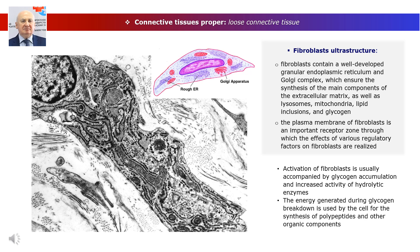At the ultrastructural level, fibroblasts contain a well-developed granular endoplasmic reticulum and Golgi complex, which ensure the synthesis of the main components of the extracellular matrix, as well as lysosomes, mitochondria, lipid inclusions, and glycogen. The cytoskeleton is clearly expressed. The plasma membrane of fibroblasts is an important receptor zone through which the effects of various regulatory factors are realized. Activation of fibroblasts is usually accompanied by glycogen accumulation and increased activity of hydrolytic enzymes, with the energy used for synthesis of polypeptides and other organic components.